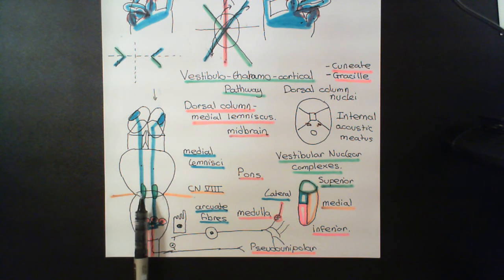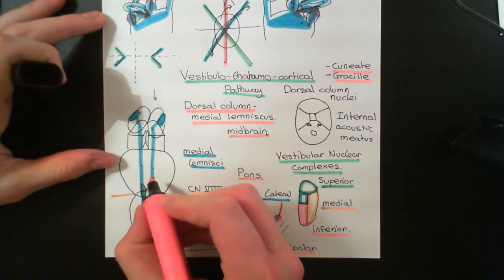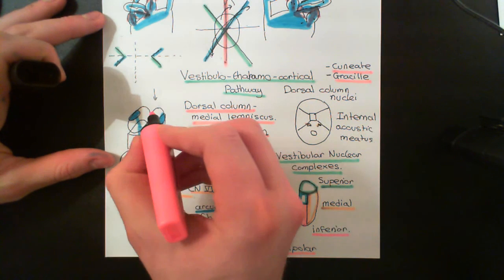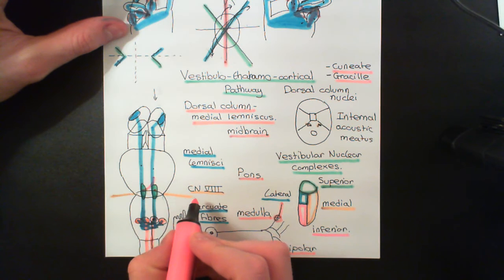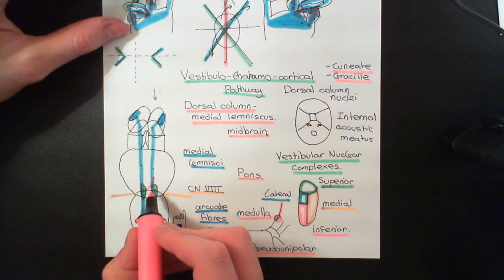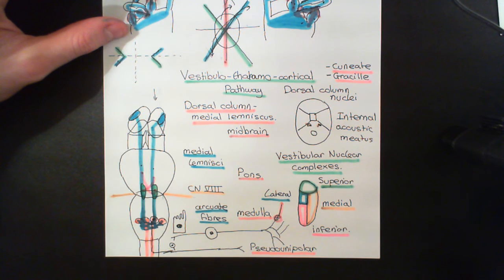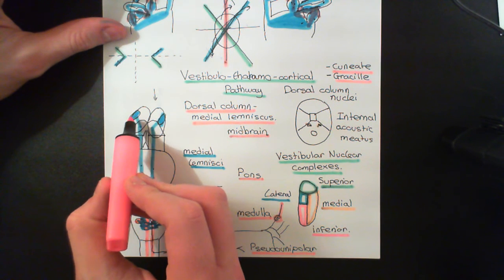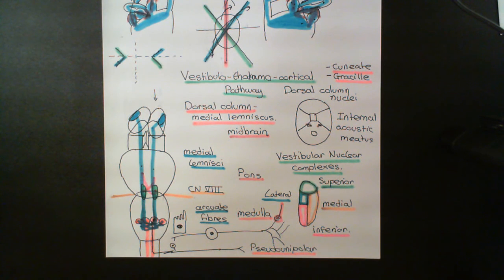To clarify: the second-order neurons in the right vestibular nuclear complex will send their axons into the left medial lemniscus — so there is a crossover — and will ascend up to the left lateral and ventral posterior thalamic nuclei, and the third-order neurons will go to the left vestibular cortex. For the left side, the bipolar neurons come in from the left vestibular system, synapse on second-order neurons that send axons into the right medial lemniscus, up to the right thalamic nuclei, and then to the right vestibular cortex. So it does cross — it goes to the contralateral vestibular cortex. Sorry about that. That is the vestibulo-thalamo-cortical pathway now finished.